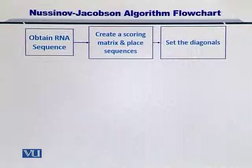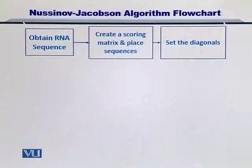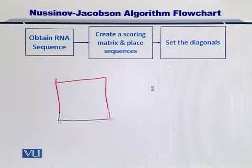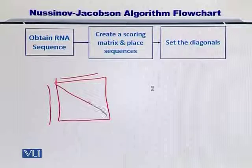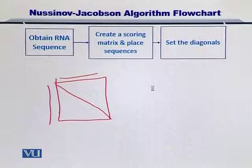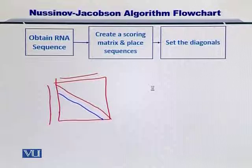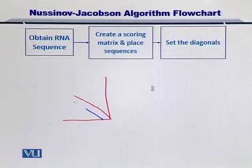Next, you set the diagonal of the matrix to be 0 as well as the lower diagonal. If this is your matrix and here is your sequence, then you will set this diagonal to be 0 as well as the lower diagonal. Once you have done that, you can move towards computing the scores and filling up the matrix.